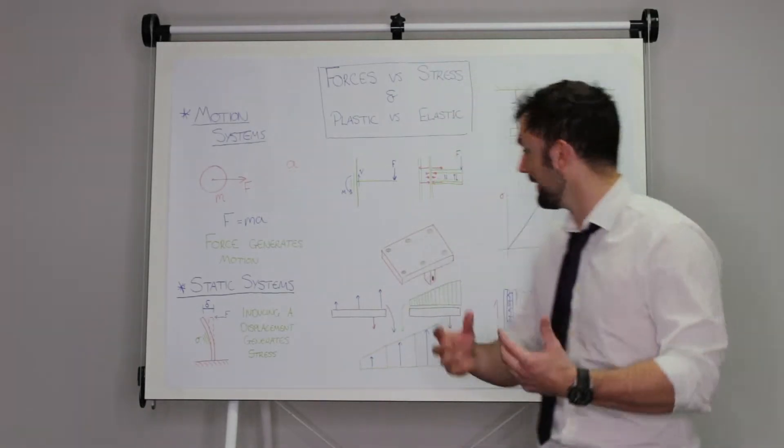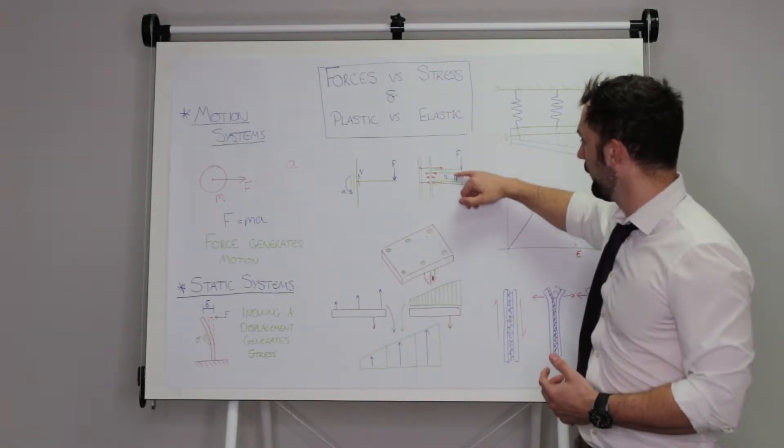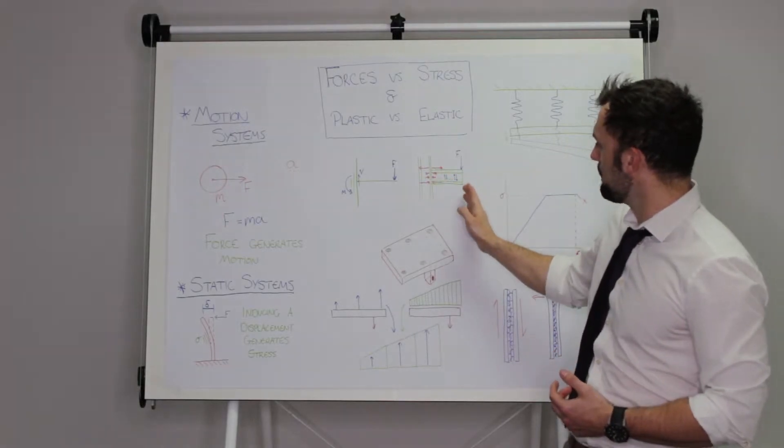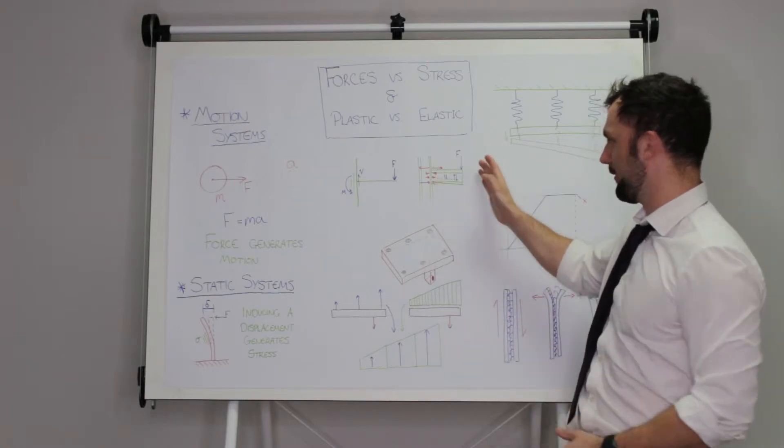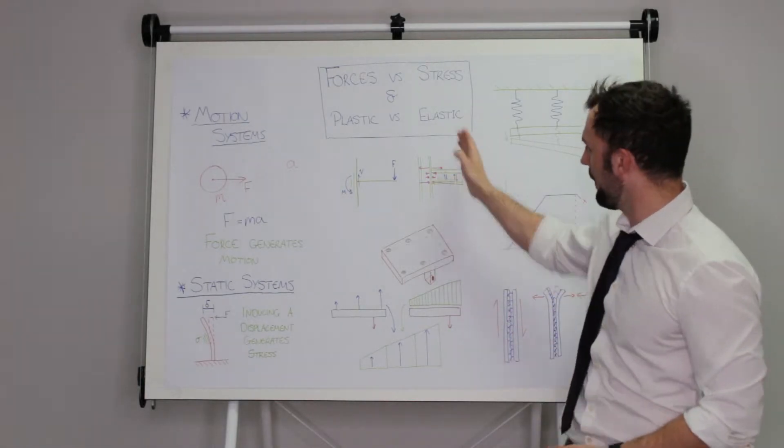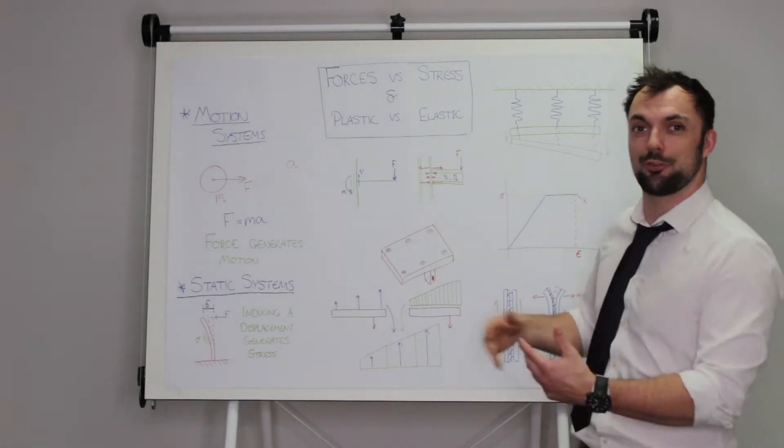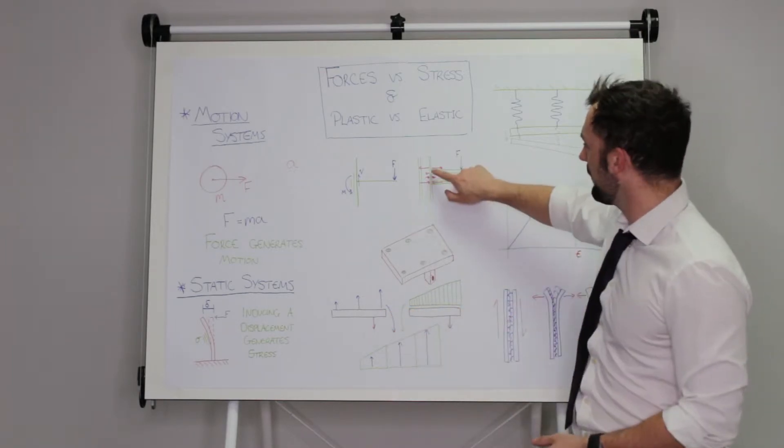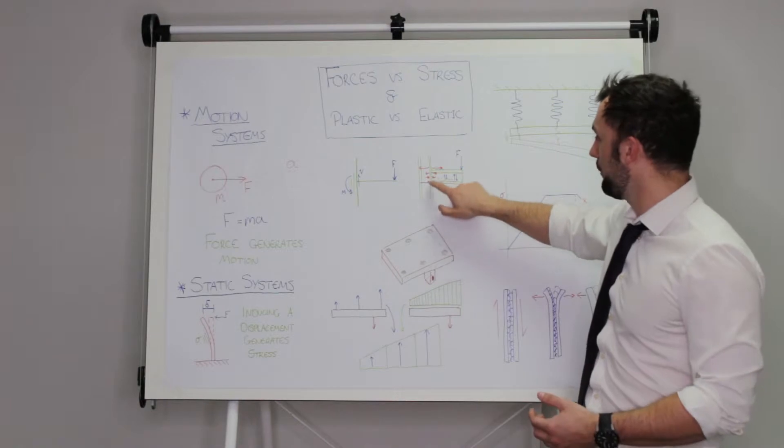The way that's generated in reality is that there are shear forces running all the way through this beam equally along it. The particles to the left-hand side are holding up the particles on their right, and the particles on their left-hand side are holding those ones up, and so on and so forth. But how the moment is generated is that there is a tension at the top of the beam and a compression at the bottom.